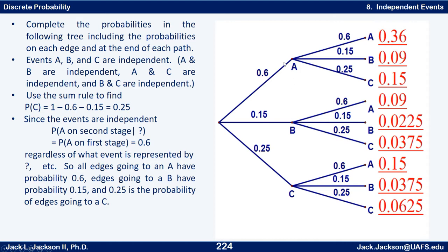Then just multiply: 0.6 times 0.6 is 0.36, 0.6 times 0.15 is 0.09, 0.6 times 0.25 is 0.15, and so on.